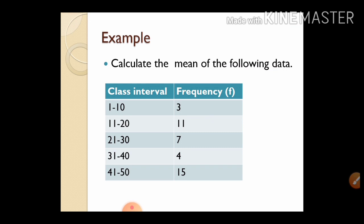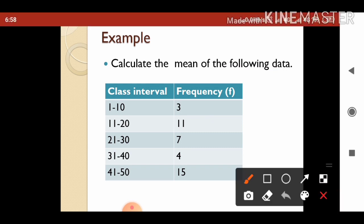See this example: calculate the mean of the following data. The class intervals given are 1–10, 11–20, 21–30, 31–40, and 41–50, along with their frequencies. The formula has already been discussed; let us see how the calculation is done.